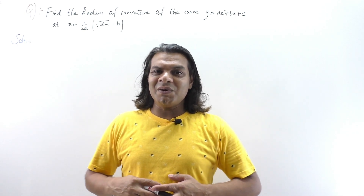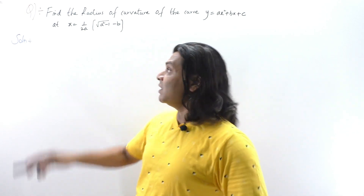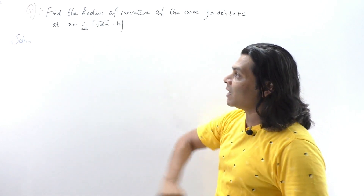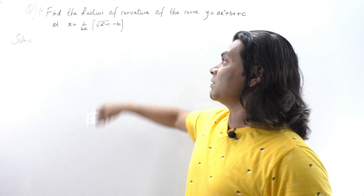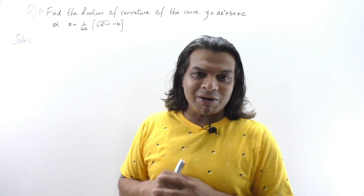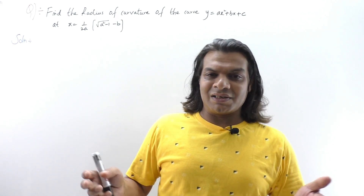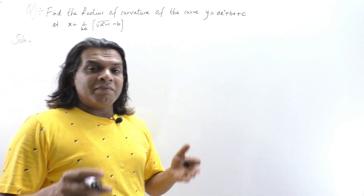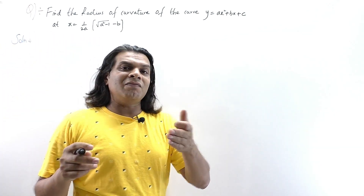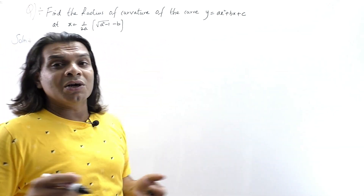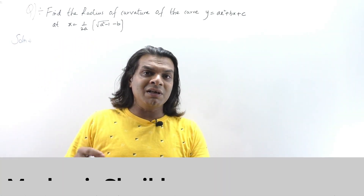The next problem we are going to discuss is: find the radius of curvature of the curve y = ax² + bx + c at x = 1/(2a)(√(a²-1) - b). A very simple question and no specific point of intersection is given. We put this into the formula: the radius of curvature for a Cartesian curve is ρ = (1 + (dy/dx)²)^(3/2) / (d²y/dx²).